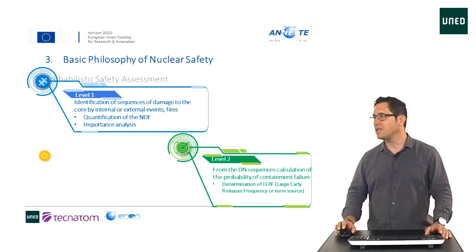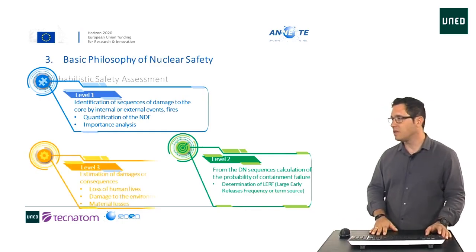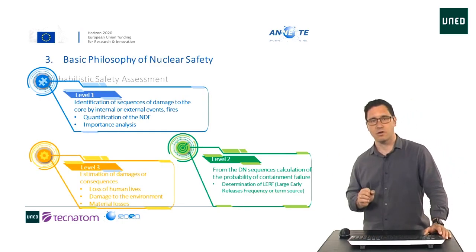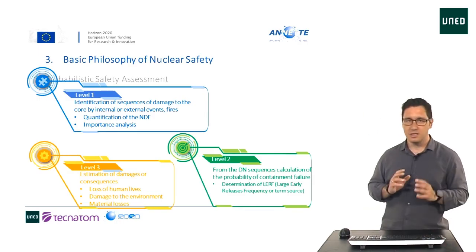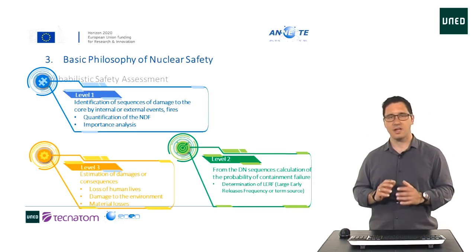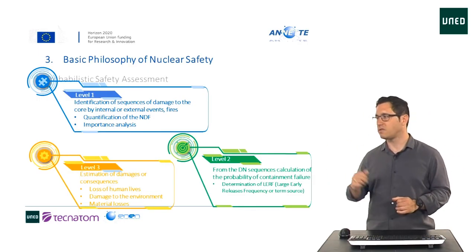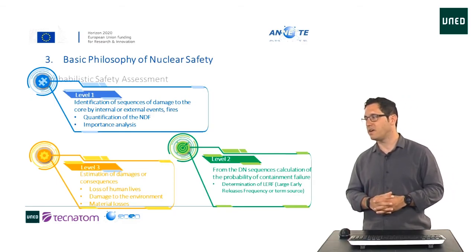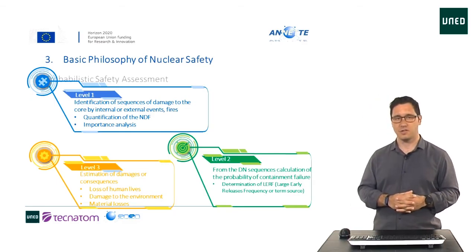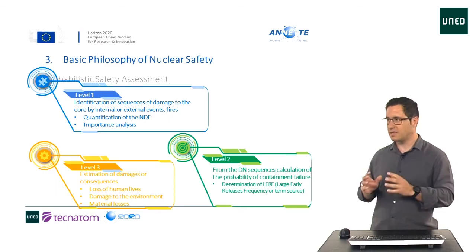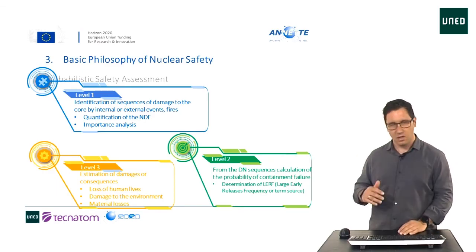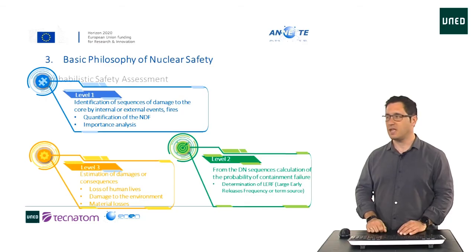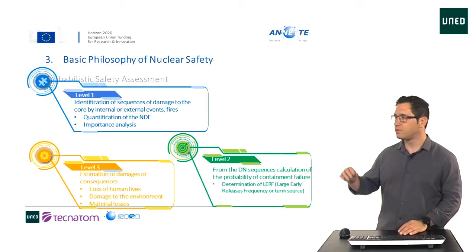And finally, we have the third level, which is the estimation of damages or consequences. In those damages and consequences, we have loss of human life, damage to the environment, and material losses. As you can imagine, this happens when the event escalates to level 3.